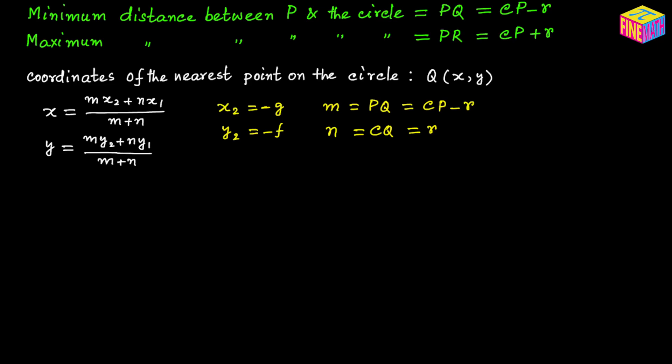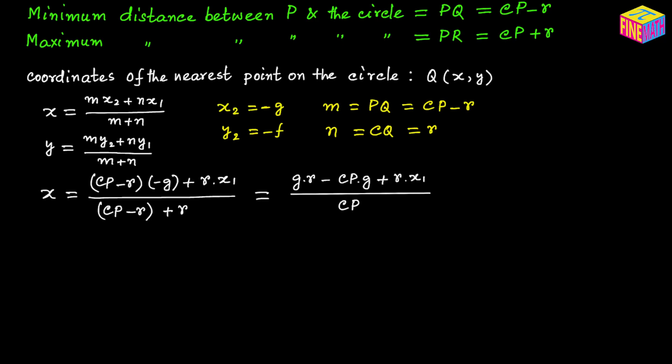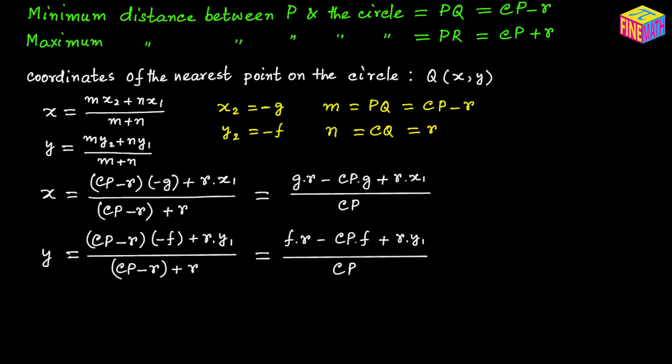Plugging in these values, the x-coordinate of Q can be derived and simplified accordingly, and similarly the y-coordinate of Q can be computed. So using the section formula we can easily calculate the coordinates of the nearest point on the circle, which is point Q.